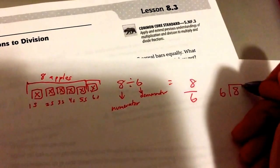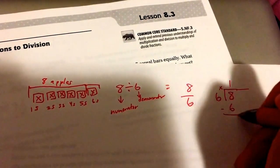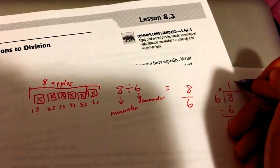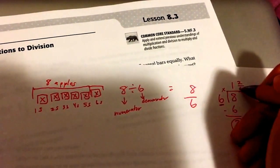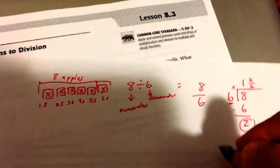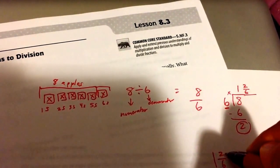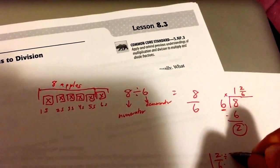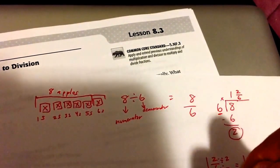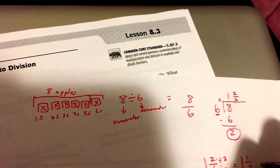The second number goes outside. And 6 goes into 8 one time. 6 times 1 is 6. And there's 2 left over. What do we do? This becomes our numerator. And this is our denominator. So, everyone gets 1 and 2 sixths of an apple. Can we reduce that? Yes. We'll take that 1 and 2 sixths, and we ask ourselves, what number can go into the top and bottom? The number 2. The number 2. So, when we reduce it, it's 2 divided by 2 is 1. 6 divided by 2 is 3. And finally, we have 1 and 1 third apples.